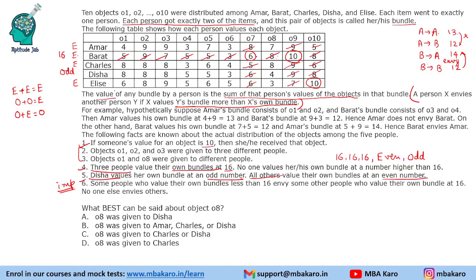Now let us do for Elise also. Elise has got O10 and should get another even number to get an even total. If Elise gets O8 she will have 18, which is not possible. So Elise will get either this 6 or that 6 from the table, meaning Elise will also have a total of 16 only.